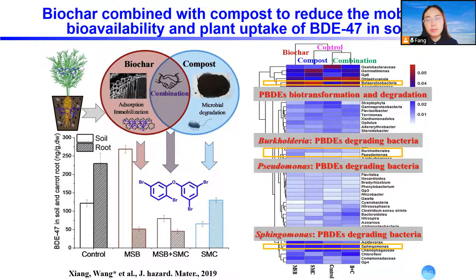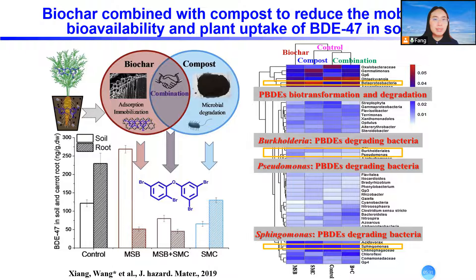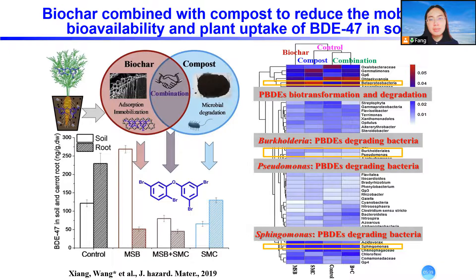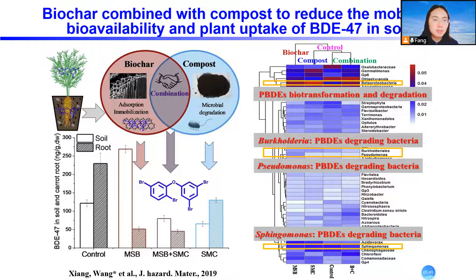We also tried using biochar combined with compost to reduce the mobility of POPs from the soil to the plant. This is due to the combination of the sorption of biochar for chemicals, plus the compost providing nutrition for enhanced microbial degradation activity on the chemicals in the soil.